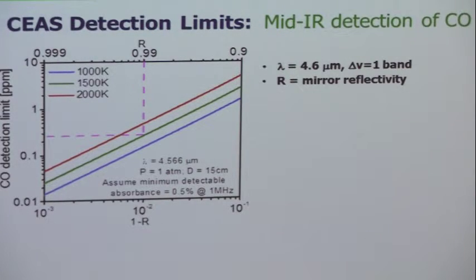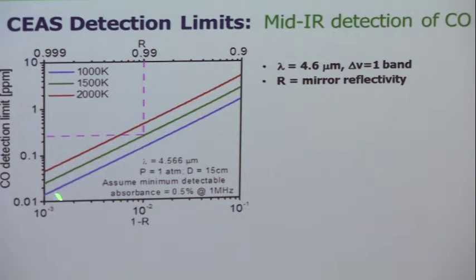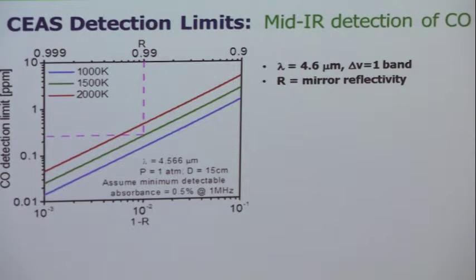Here's a plot of detection limits in ppm versus 1−R. If R = 0.99 and temperature is 1500 K, our detection limit is around 0.3 parts per million. That's amazing — 100 times better than what we were doing, assuming no increased noise. Is this the same as cavity ring-down? Most people use highly reflective mirrors and send in a pulse, then watch the decay time of that pulse — that's cavity ring-down, a very powerful idea.